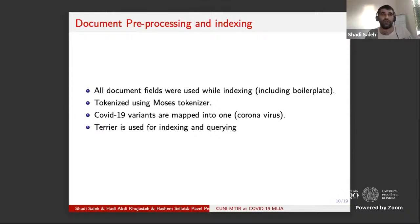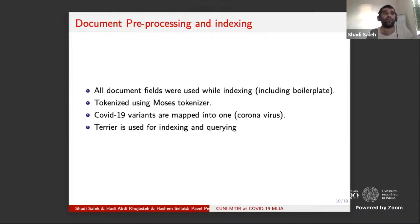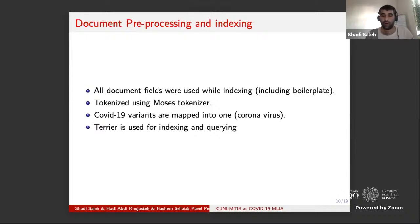We wanted to see the effect of this mapping, and hopefully in the second round we will have more data to see how much it affected the result. We used Terrier for indexing and querying. For subtask 2, we were aiming at higher recall. To achieve this, we lemmatized the collection and the queries using UDPipe, which contains around 94 models for different languages. Here are some statistics about the data after lemmatization — you can see the reduction in number of tokens and vocabularies.